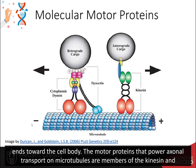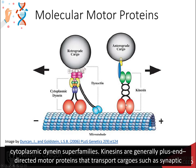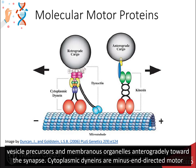The motor proteins that power axonal transport on the microtubules are members of the kinesin and the dynein superfamilies. Kinesins are generally plus end-directed motor proteins that transport cargo, such as synaptic vesicle precursors and membranous organelles, anterogradely toward the synapse.